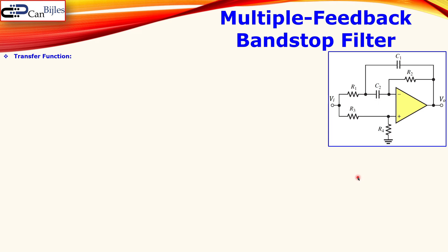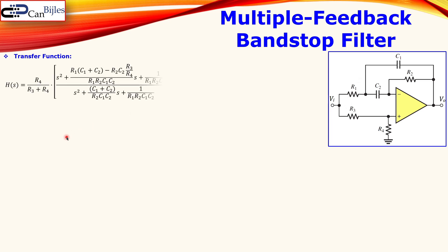Looking at the transfer function — the output voltage divided by the input voltage — you get this expression containing all the circuit components. We can make this more practical by selecting and equalizing some values. In the numerator we have a second-order expression, and in the denominator also — which is no surprise since this is a second-order filter circuit.